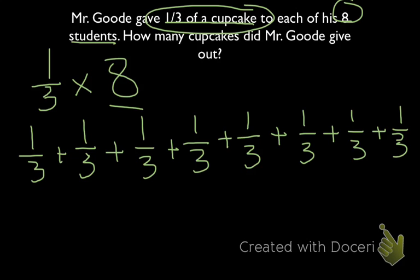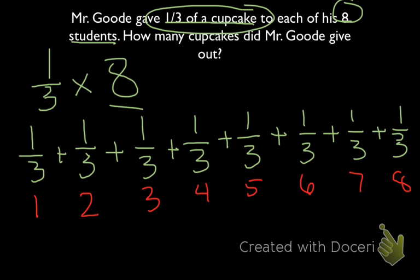So now — let's use a different color here — we have 1, 2, 3, 4, 5, 6, 7, and 8 one-third cupcakes to give out in total.